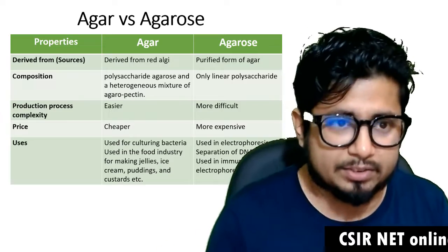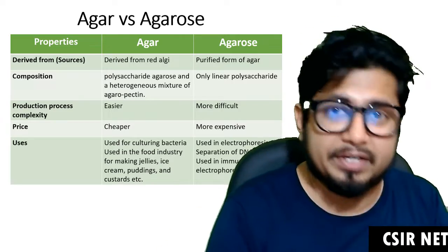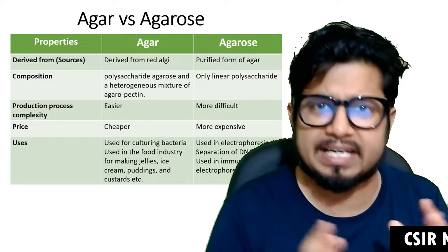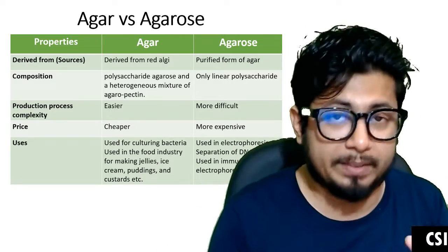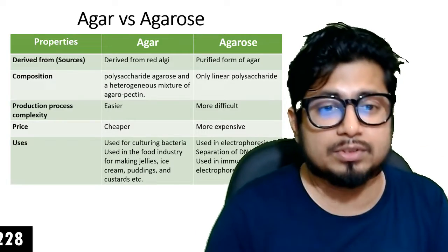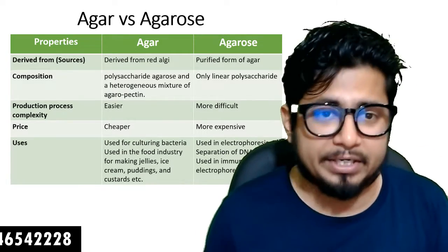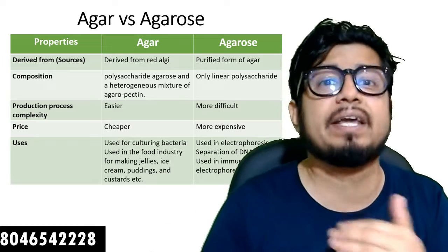The final parameter is the uses. Agar is used for culturing bacteria and also in the food industry to make jellies, ice creams, puddings, custards, and many other things where you need to solidify something.